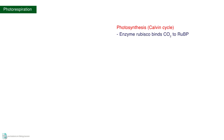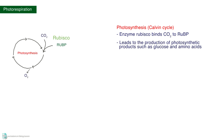In photosynthesis, specifically during the Calvin cycle, the enzyme Rubisco binds carbon dioxide to RuBP and eventually leads to the production of photosynthetic products such as glucose and amino acids.